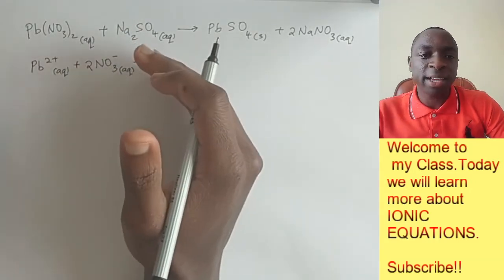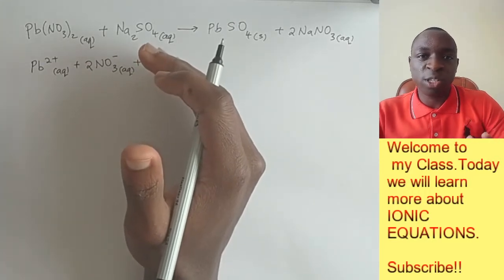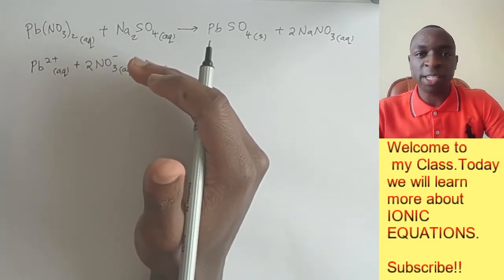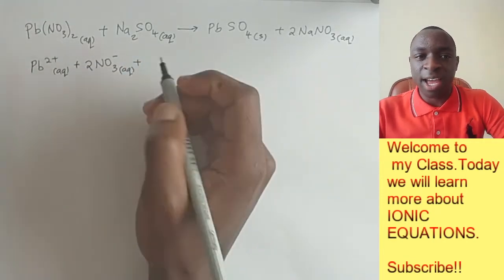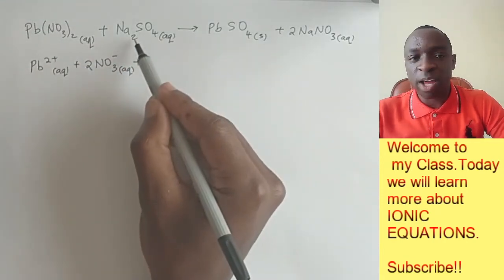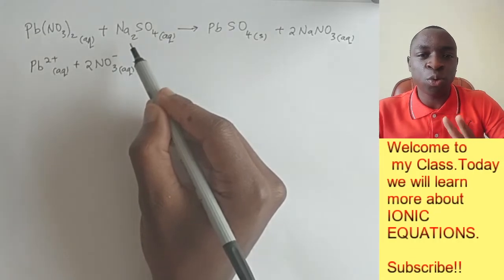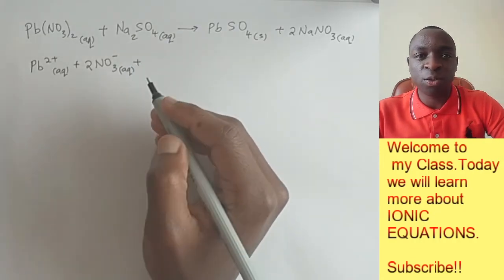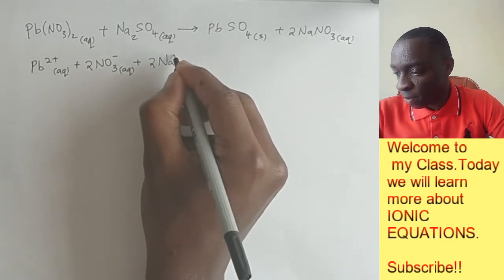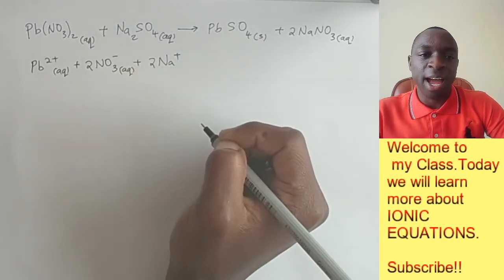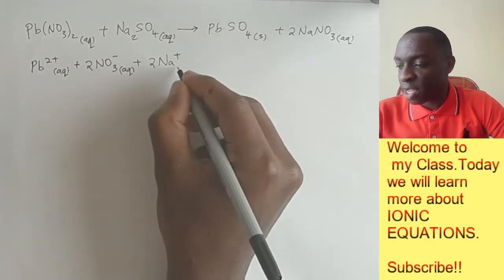And then again, since sodium sulfate is also aqueous, we need to split it into sodium ions and sulfate ions. As you can see, we have a two down here. That means we have two sodium ions. So the two now comes before two sodium ions. And again, maintain the state symbol, which is aqueous.